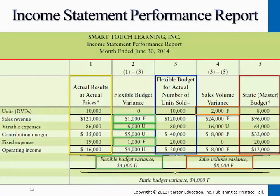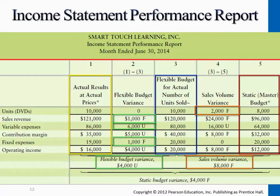If we compare the flexible budget with the actual results, the sales revenue part shows we actually have an additional $1,000, which is favorable to operating income. This means some sales transactions were above $12 per unit, leading our sales revenue to exceed $120,000. For variable expenses, we should have spent only $80,000, but we spent $6,000 more - unfavorable to operating income. For fixed expenses, we spent less; perhaps we overestimated depreciation on certain machines, spending only $19,000 versus the expected $20,000 - a $1,000 favorable variance.